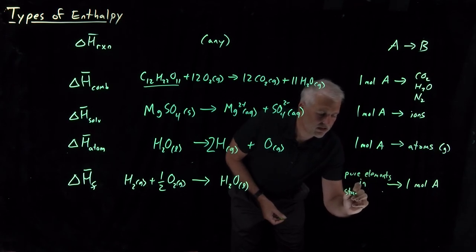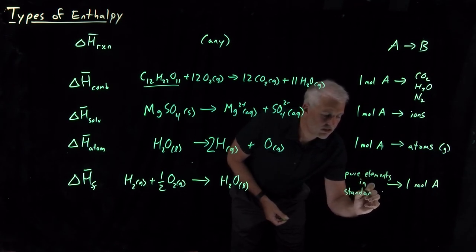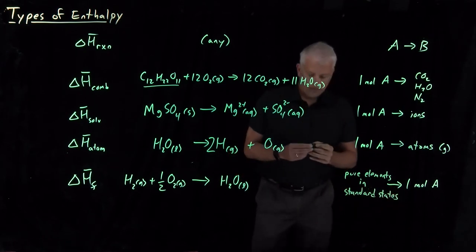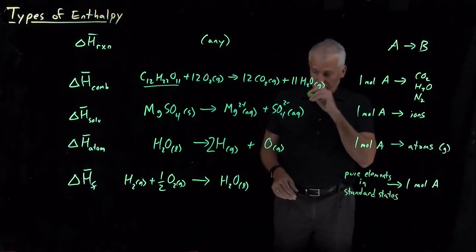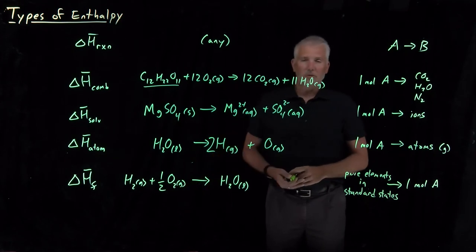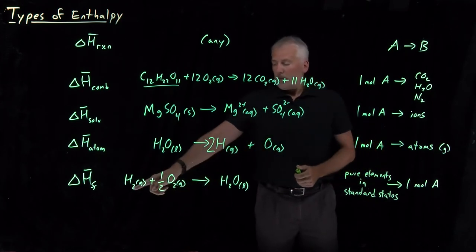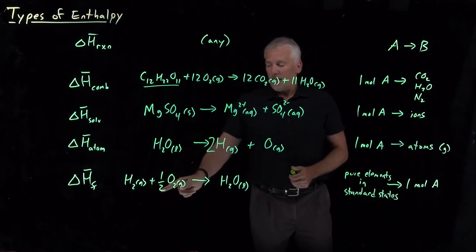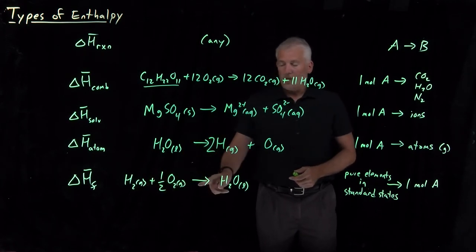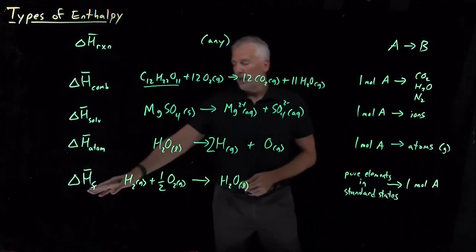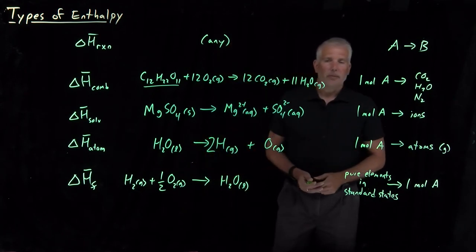Elements in their standard states, meaning the states they would have at typically 273 kelvin and one atmosphere pressure. So elements in their standard states would be gaseous hydrogen and oxygen. The delta H or the enthalpy change associated with forming one mole of water out of elements in their standard states, that would be called the molar enthalpy of formation.